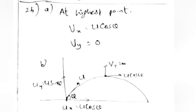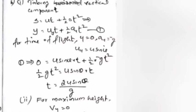Answer: At highest point, u_x equals u cos theta and u_y equals 0. Taking vertical component: s equals ut plus half at squared. For time of flight, y equals 0, a equals minus g, and u equals u sin theta.